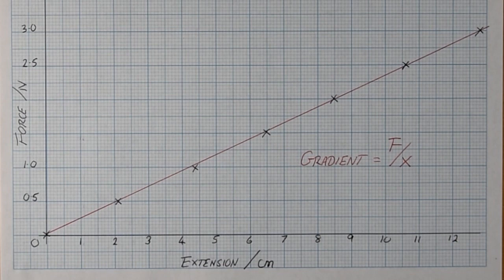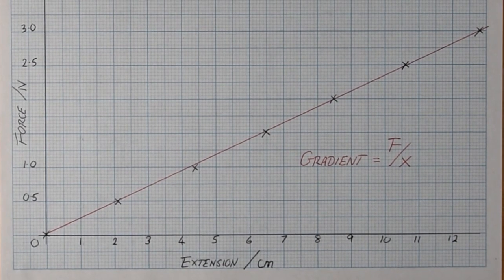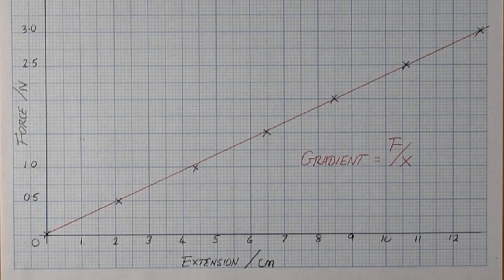This graph produces a straight line going through the origin. It is directly proportional. And this straight line shows that the relationship is linear.